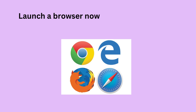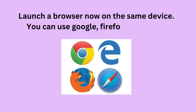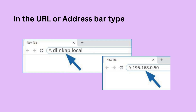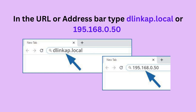Launch a browser now on the same device — you can use Google, Firefox, Safari, etc. In the URL or address bar, type dlinkop.local or 192.168.0.50.